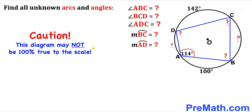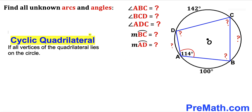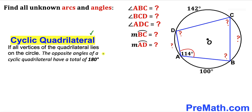Please note that this figure may not be 100% true to scale. Let's get started. Recall that for a cyclic quadrilateral, if all the vertices of the quadrilateral lie on the circle — as we can see with points A, B, C, and D — then the opposite angles have a total of 180 degrees.